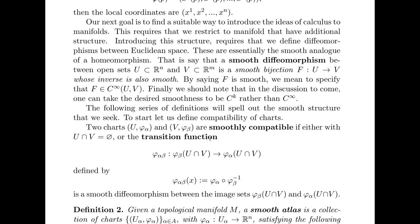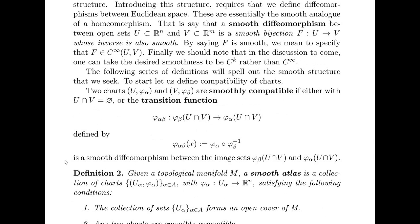This transition function is defined in the following way. It is a map from the image of this intersection under phi_β to the image of this intersection under phi_α. And it's given by the composition phi_α composed with phi_β inverse.